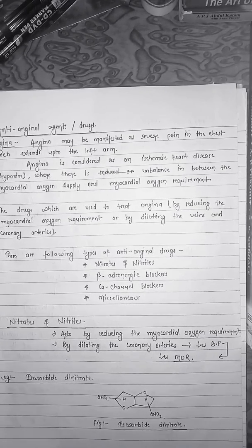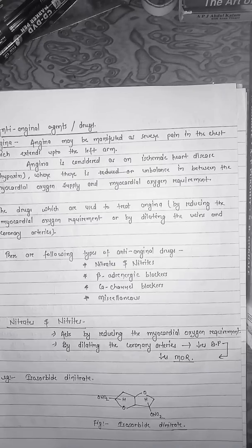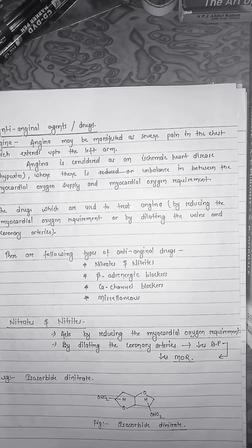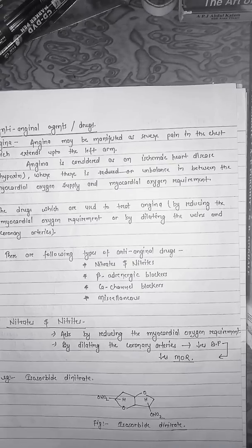Angina is considered as an ischemic heart disease — ischemic meaning lack of oxygen, or a condition of hypoxia — where there is an imbalance between the myocardial oxygen supply and myocardial oxygen requirement. The drugs used to treat angina mainly act by reducing the myocardial oxygen requirement or by dilating the veins and coronary arteries, thereby decreasing blood pressure.